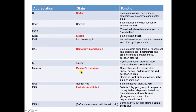Masson's trichrome is another one that you have come across, and that is a general connective tissue stain which differentiates collagen, which is stained blue, from nuclei, muscles, etc., which are stained red. And also, it will stain elastin — elastic tissue — light pink to light blue.